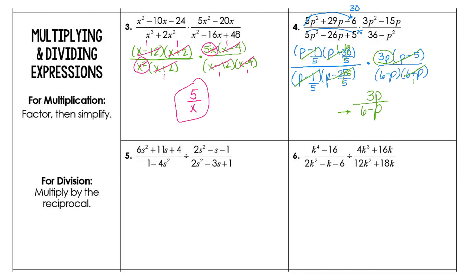Now we're to dividing fractions — keep, change, flip. I want you to keep, change, flip first, then start the factoring. If you don't and you try to do too much at one time, you will mess up. So I'm going to keep the first, change the second, then flip. Now I'm going to flip over 2s squared minus 3s plus 1, and that's all over 2s squared minus s minus 1.